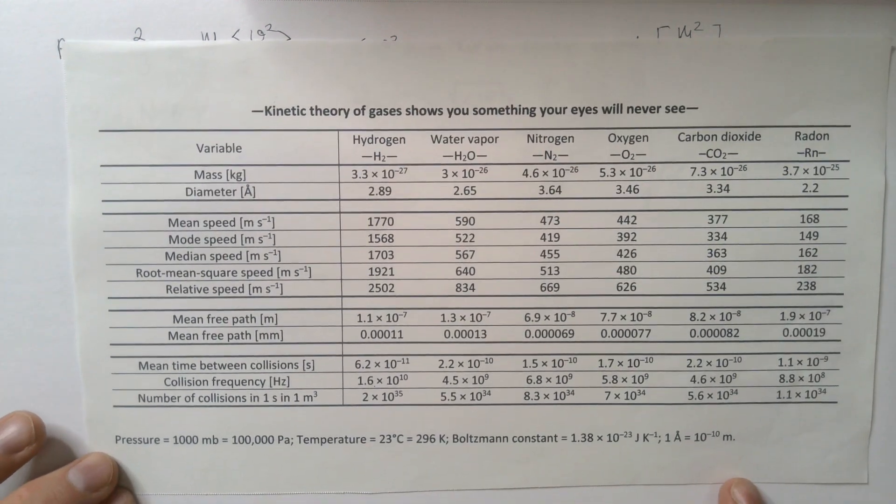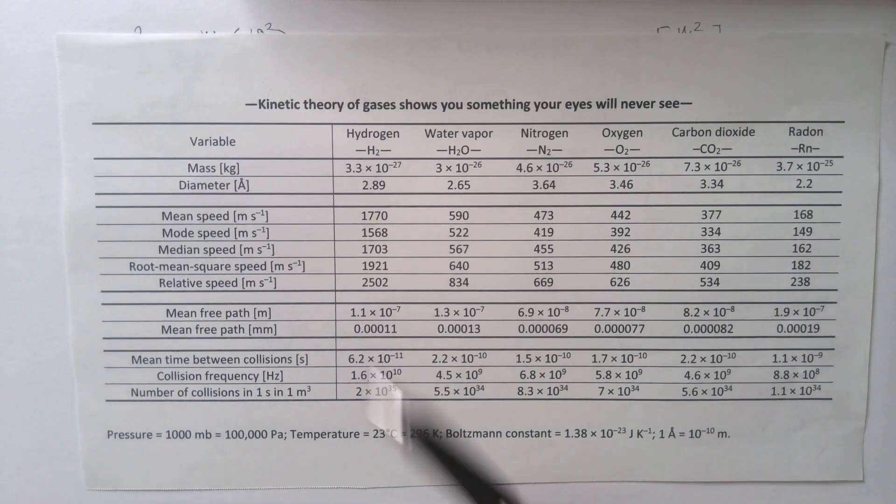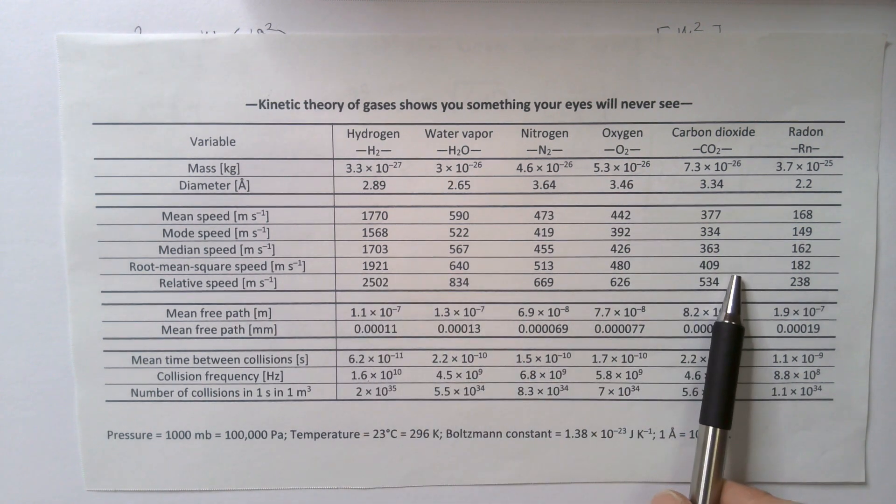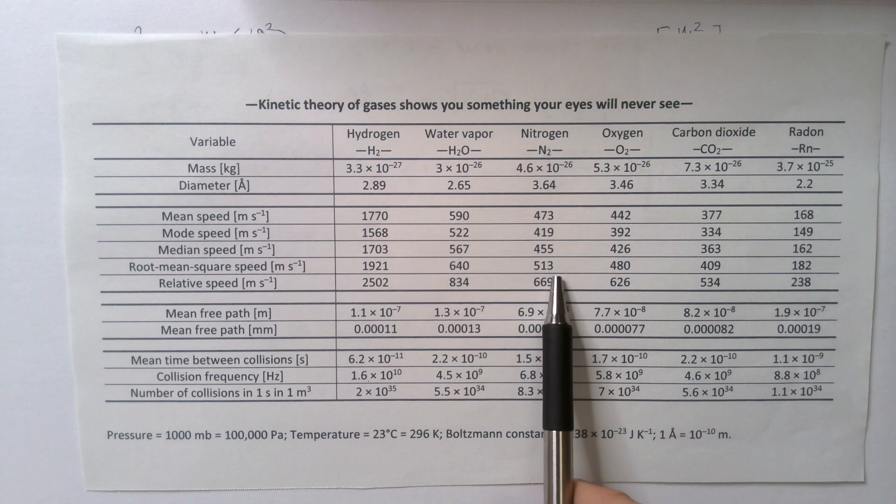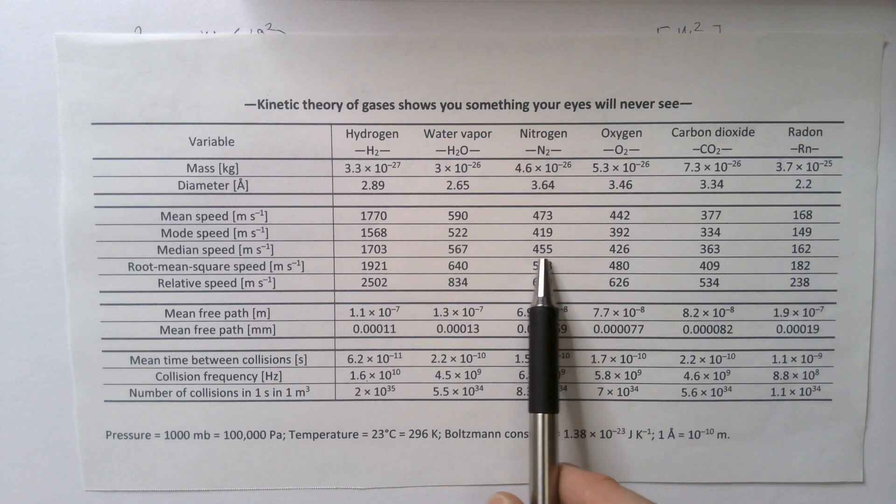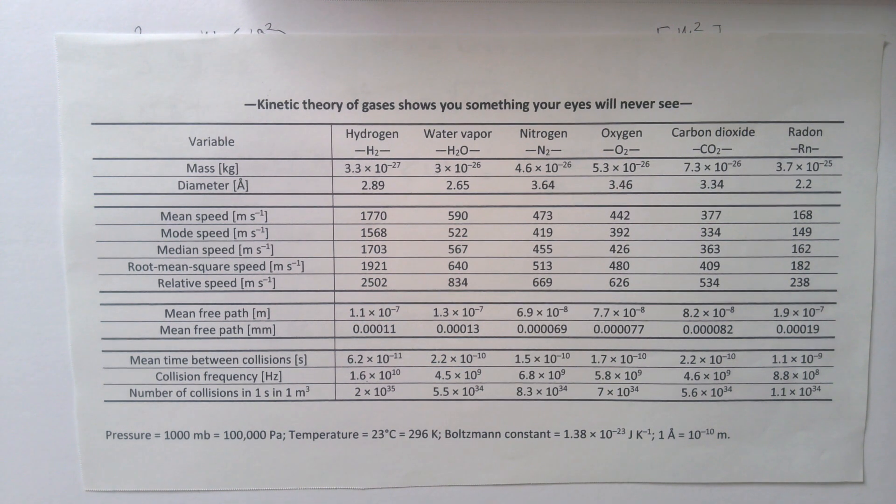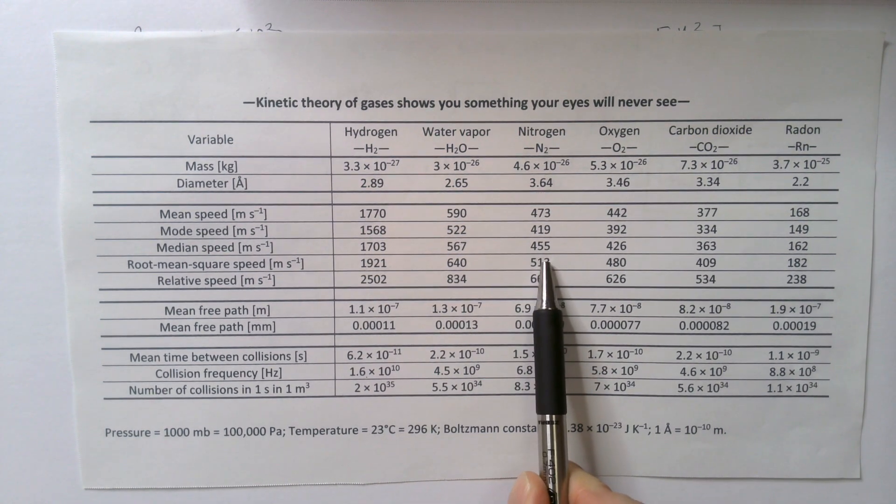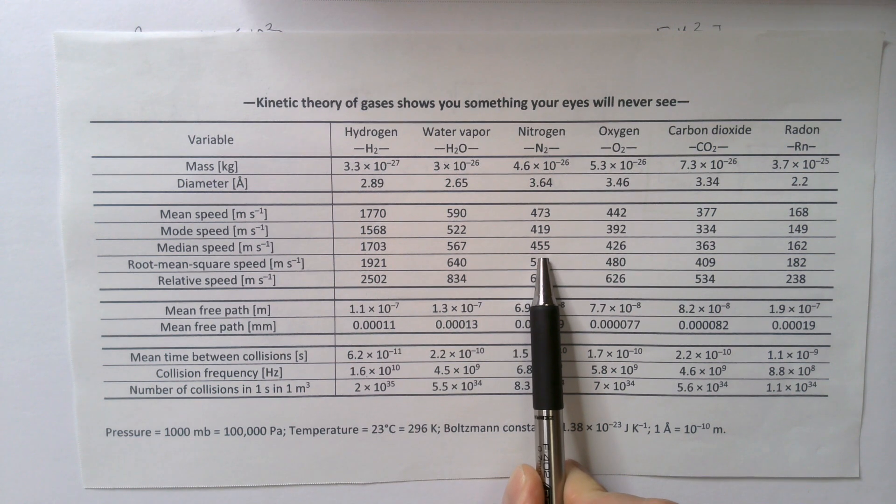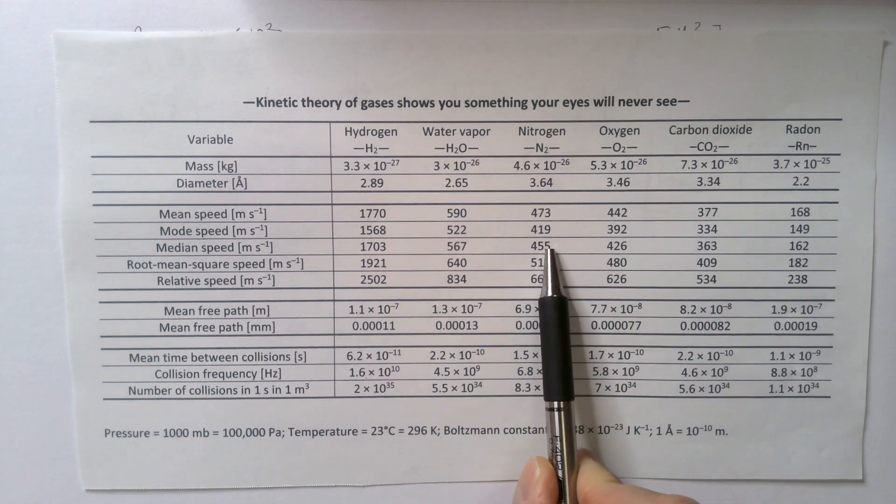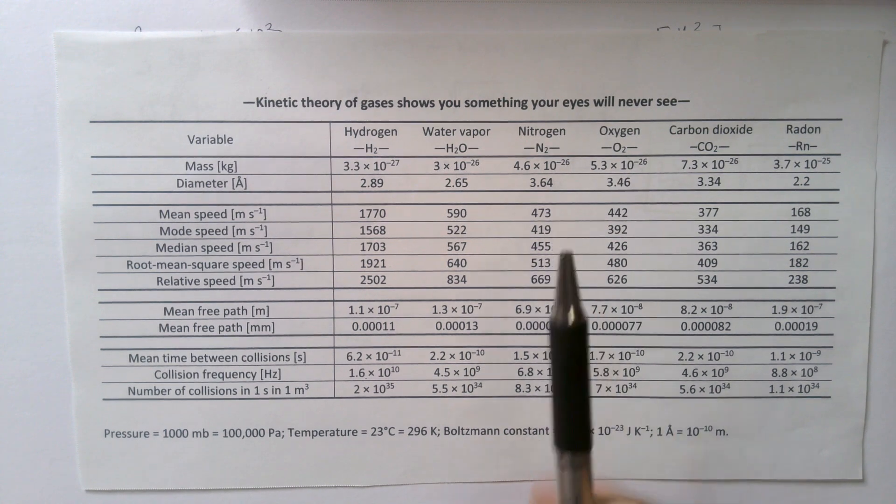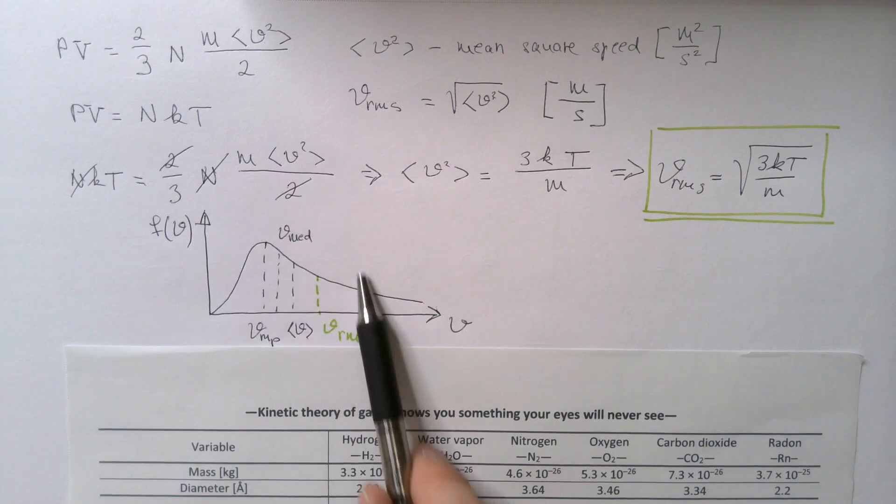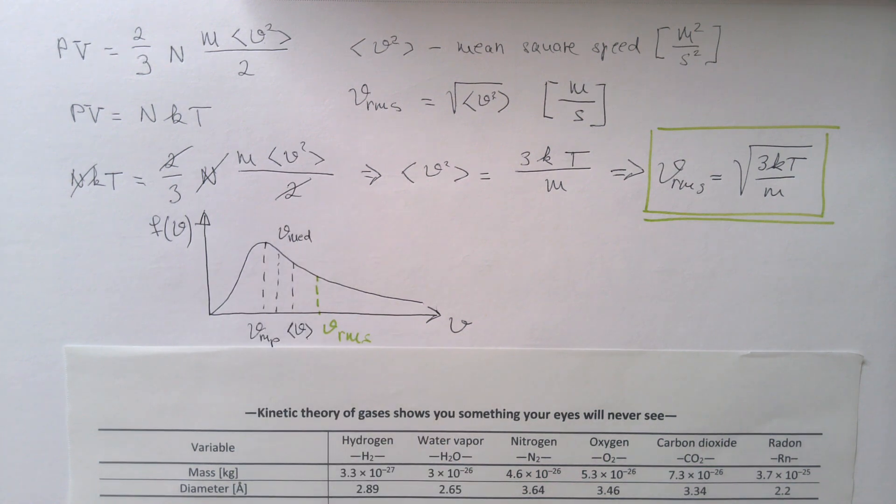Once again, like previous times, I calculated root mean square speed for typical gases in the air, nitrogen is 78% of the air that you breathe. So you can see that root mean square speed is 513 meters per second, which in turn is higher than mean speed, which in turn is higher than median speed, which in turn is higher than mode speed, which exactly goes together with what I described here in the graph.